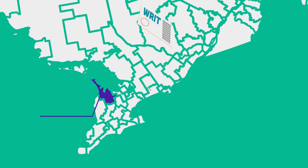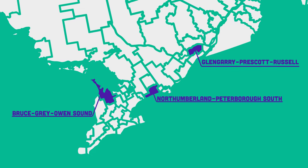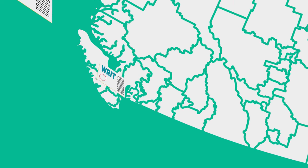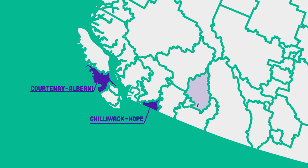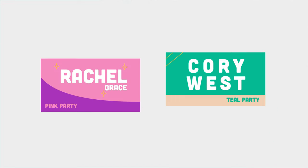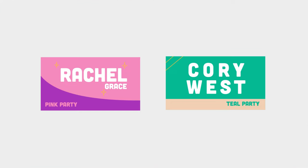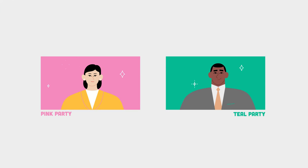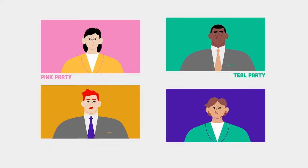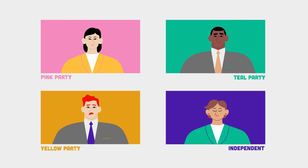Canada is divided into smaller geographic areas called ridings, or electoral districts. An election race is held in each riding to represent the people living in that area. Political parties choose individuals to stand for their party and compete for the job of Member of Parliament. Most candidates belong to a political party, but some candidates also run as independents.